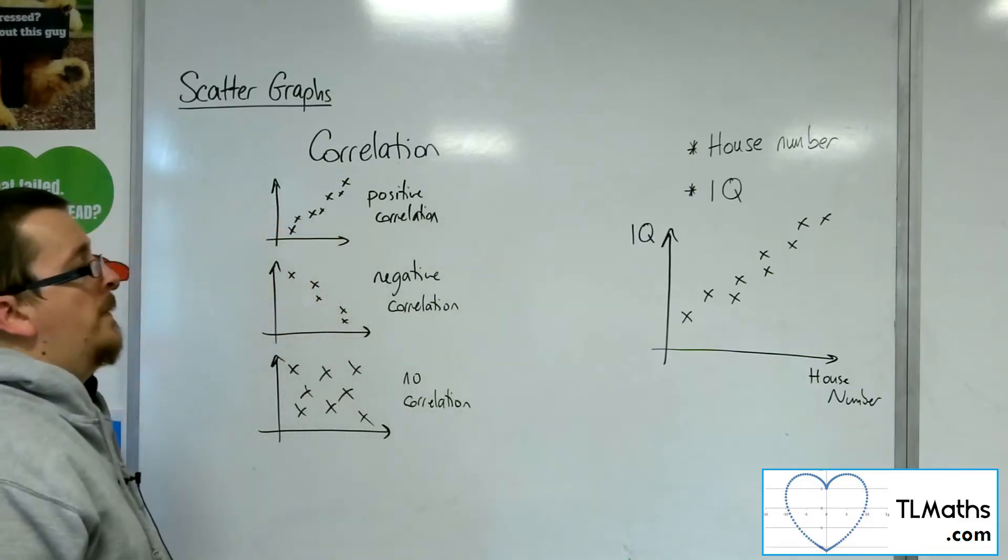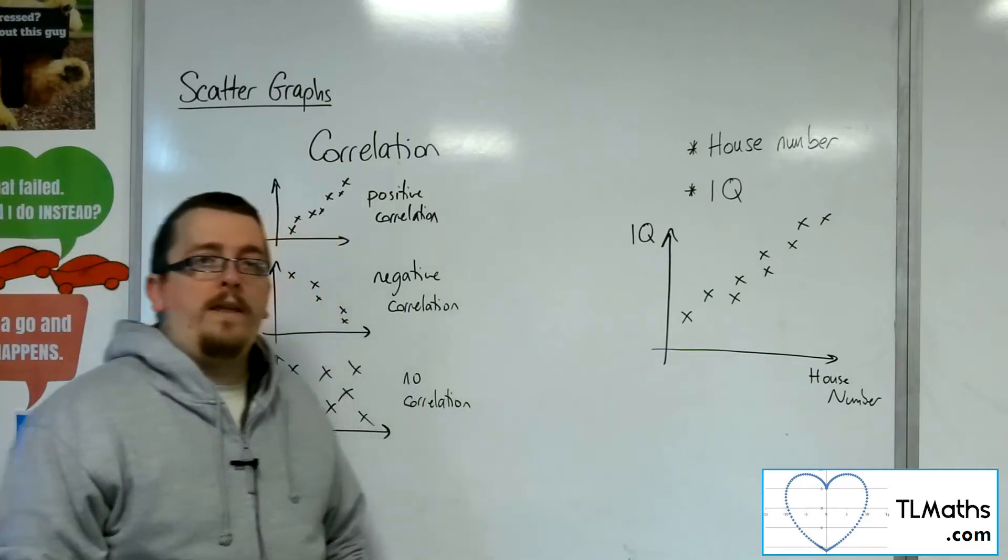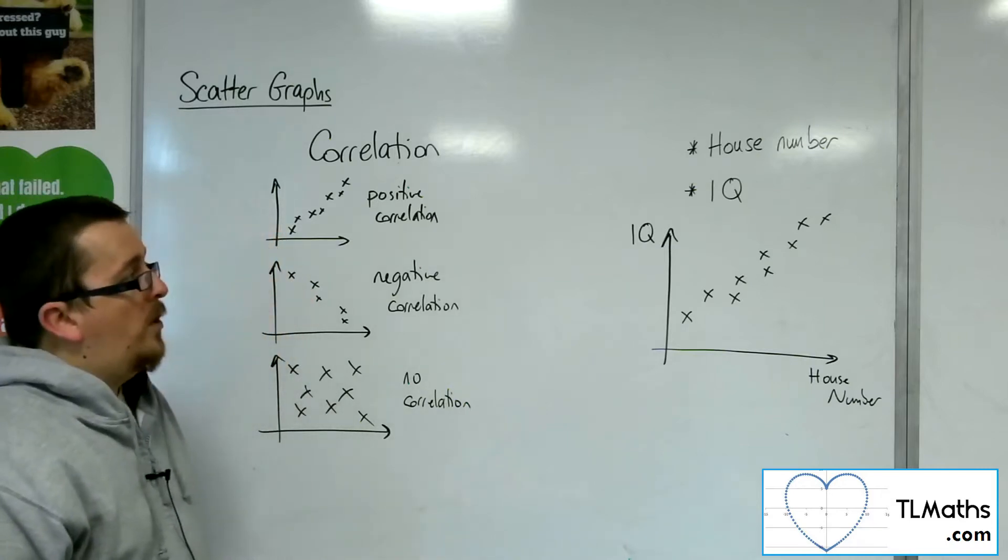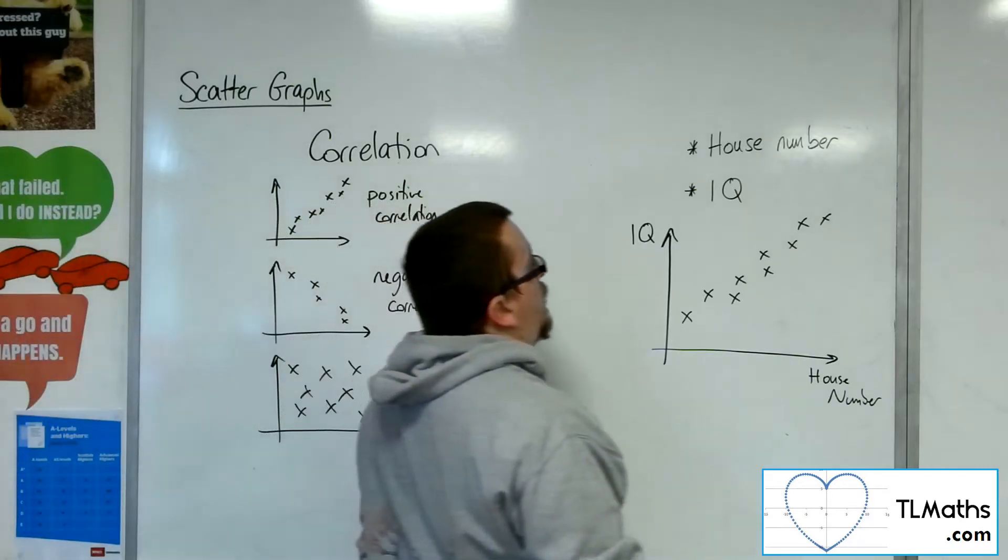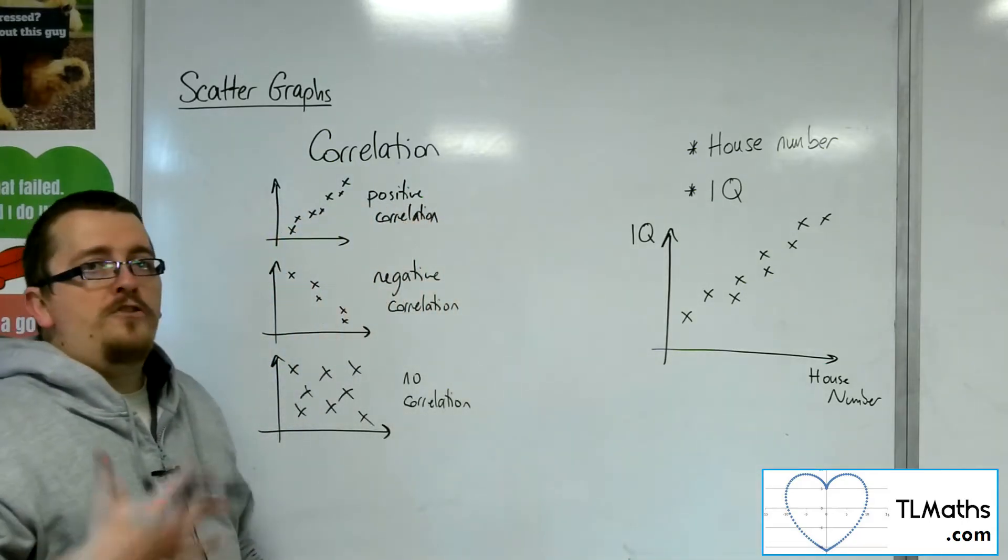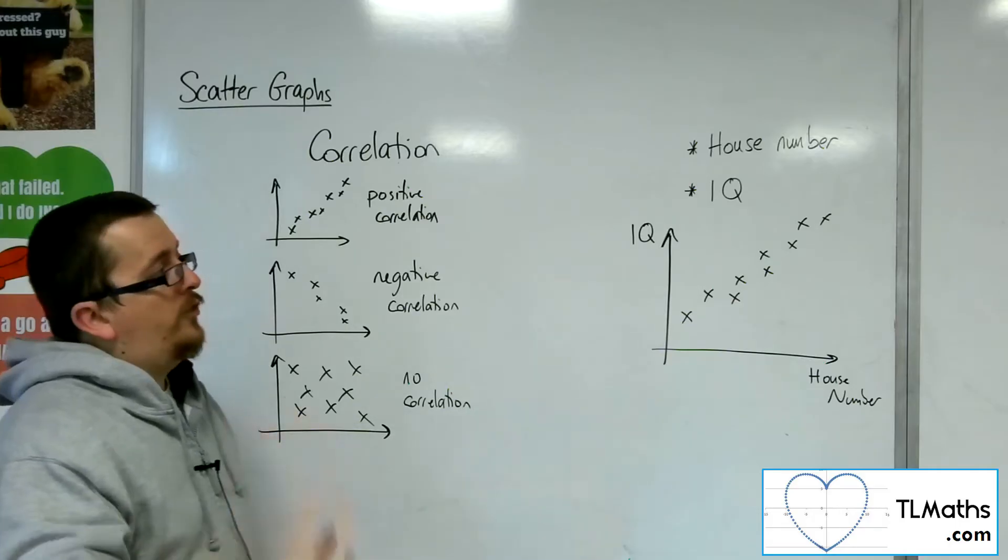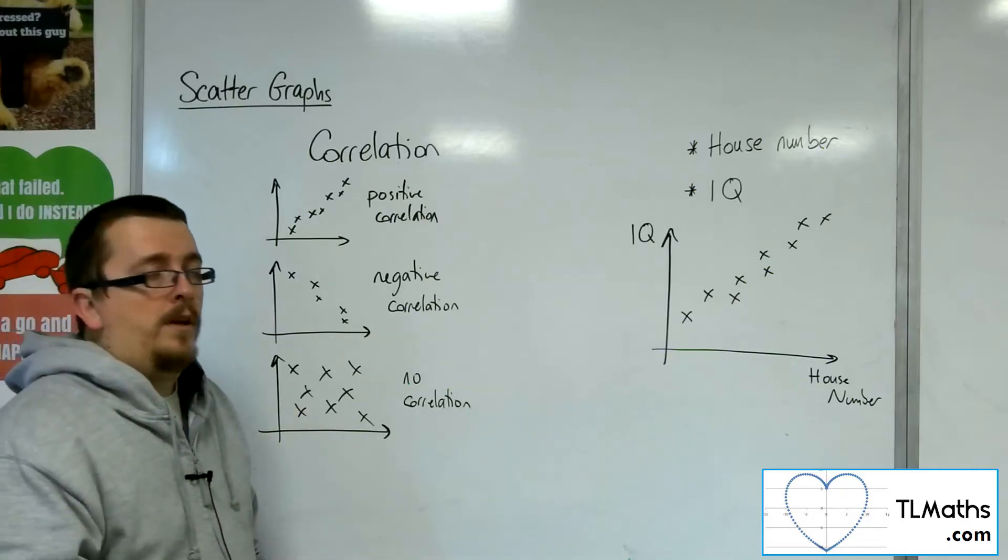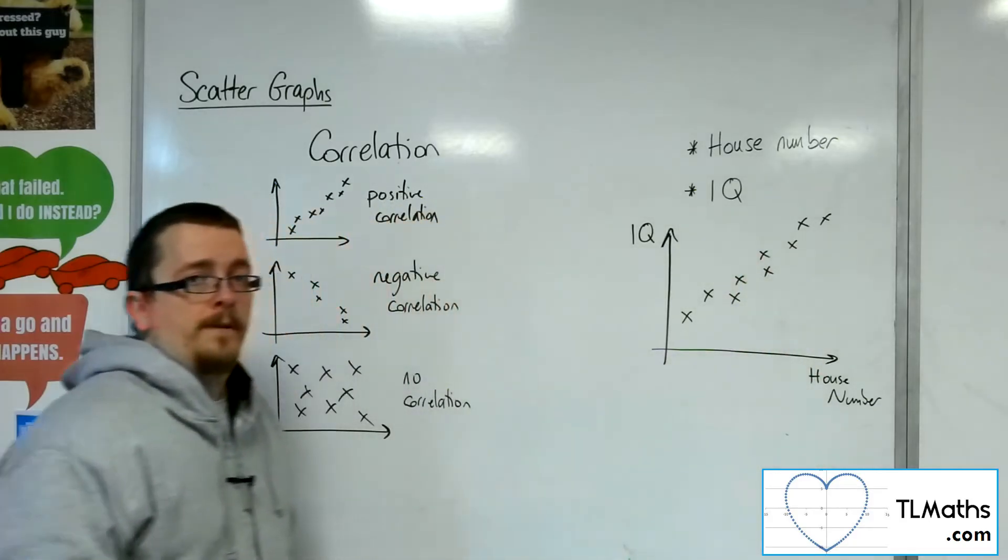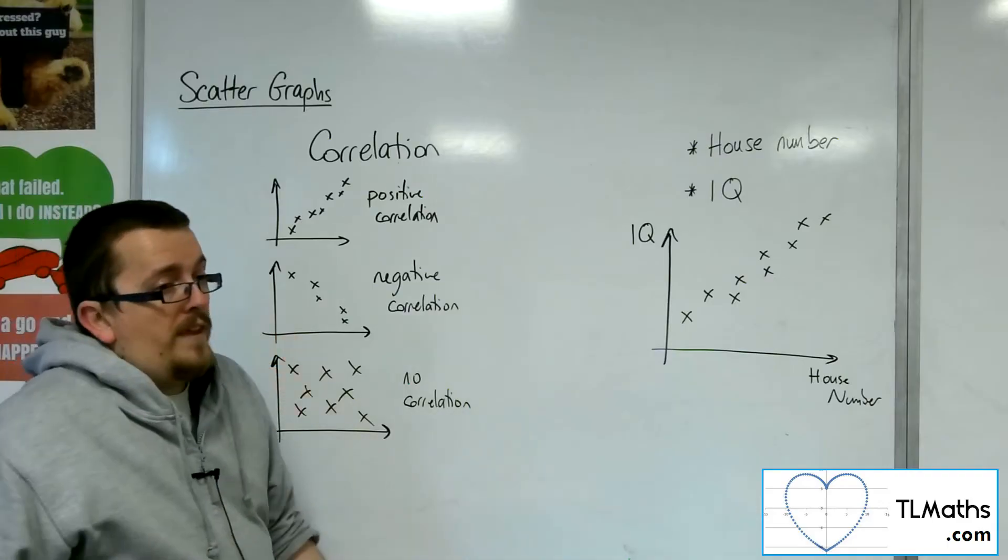So that is a problem with scattergraphs, because we can plot two bits of information that we know will have no connection whatsoever, and just through sheer fluke, they actually turn out to be correlated. But we know there's no connection.